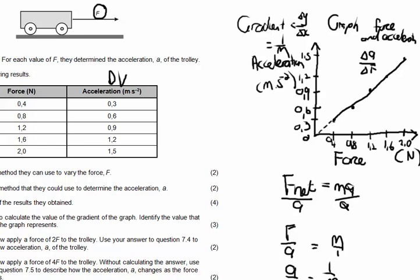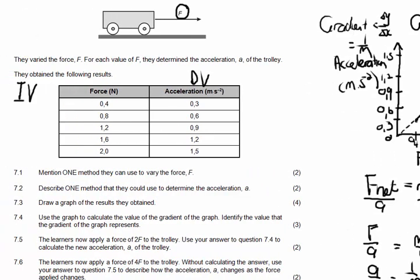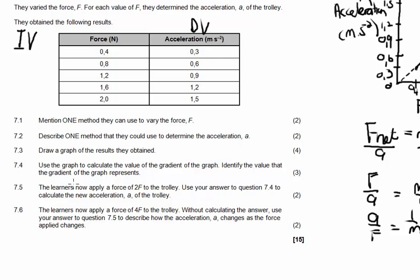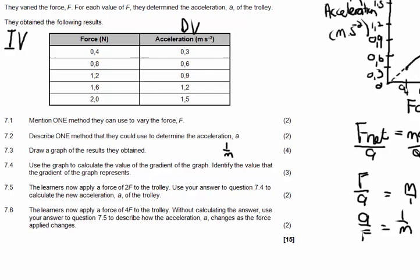Let's go back to our questions. We've now drawn our graph. The mark allocation there, only three marks - normally it will be for labeling the axis correctly, for giving a description of the graph, as well as plotting the points correctly. The next question: use the graph to calculate the value of the gradient, identify the value that the gradient of the graph represents. You see how this question could have been interpreted as mass immediately. So be careful. Go and use your basic mathematic knowledge to make sure that the gradient that you calculated is actually what you think it is, because in this case, the correct answer is actually 1 over m, and not the mass.